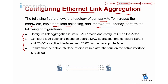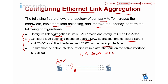First, configure link aggregation in static LACP mode and S1 is the actor. We are going to configure the priority on S1 so that S1 will become the actor. Second requirement: configure load balancing based on the source MAC address. And configure ports 001 and 002 to become active, with 003 as a backup.